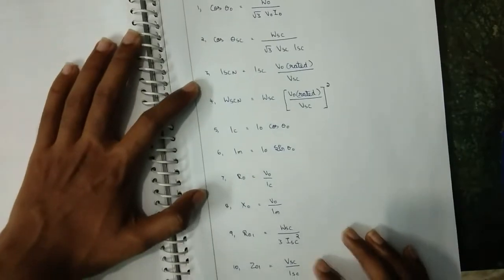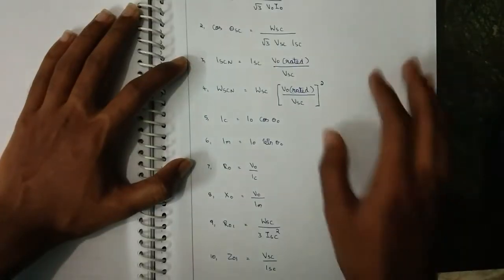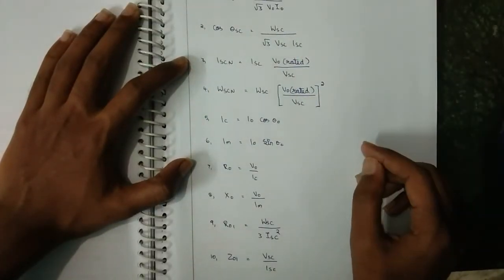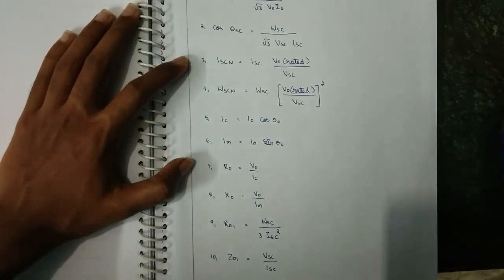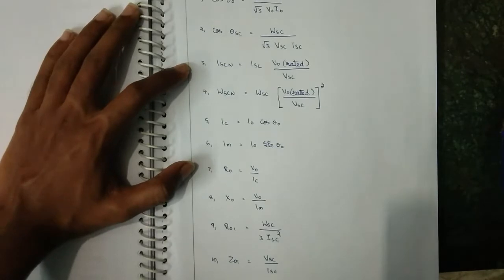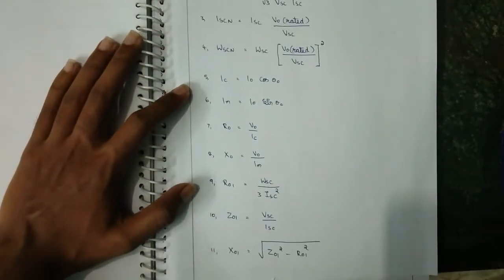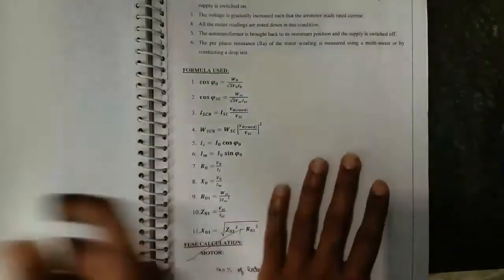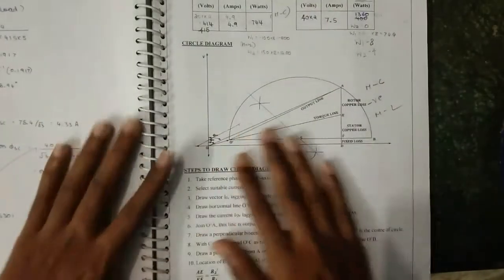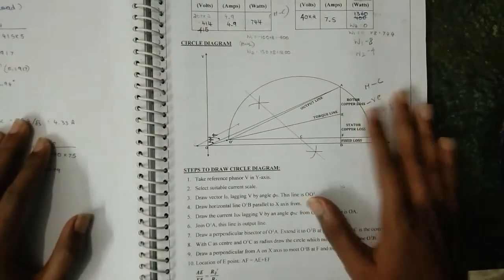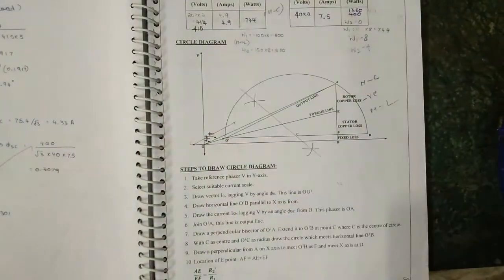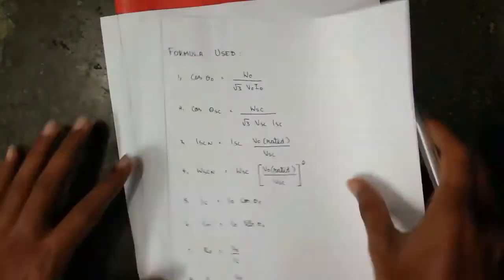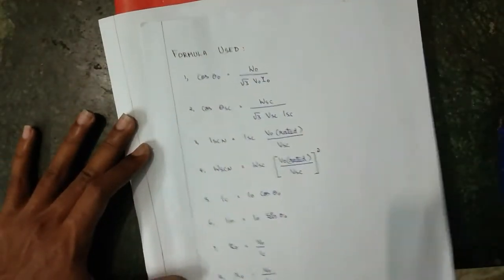The formula used for this experiment is this one. You can take a screenshot of this or you can download the file I have given in the link below. With this formula, we are going to draw this circle diagram. I will explain step by step how to draw this diagram. I'm going to write all these values.